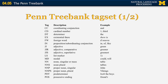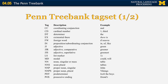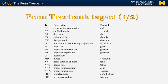Adjectives are JJ. Modals are MD. Singular or mass nouns are marked as NN, and you can add an extra S or P at the end to indicate plural. You can also have RB for adverb. The base form of a verb is VB, but you can also have special cases — VBD is the past tense of a verb such as 'took', VBG is a gerund or present participle, VBN is the past participle such as 'taken', and so on. All prepositions are marked with the special symbol IN.